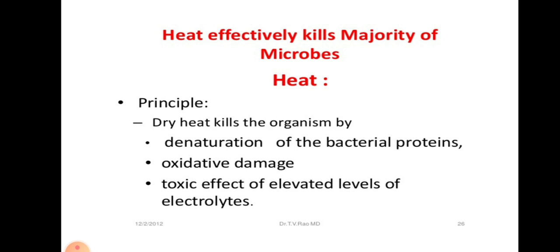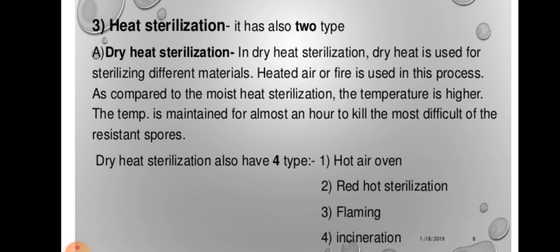Heat effectively kills the majority of microorganisms. The principle behind this is that dry heat denatures bacterial proteins and oxidation damages most of the proteins. The toxic effect of elevated levels of electrolytes destroys the microorganisms. In dry heat sterilization, dry heat is used for sterilizing different materials. Heated air or fire is used in this process. As compared to moist heat sterilization, the temperature is high.